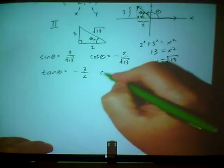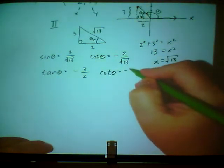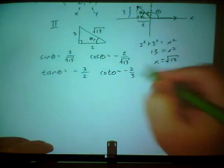Let me just quickly do the cotangent. That's pretty simple. It's the reciprocal of the tangent. Negative 2 thirds.